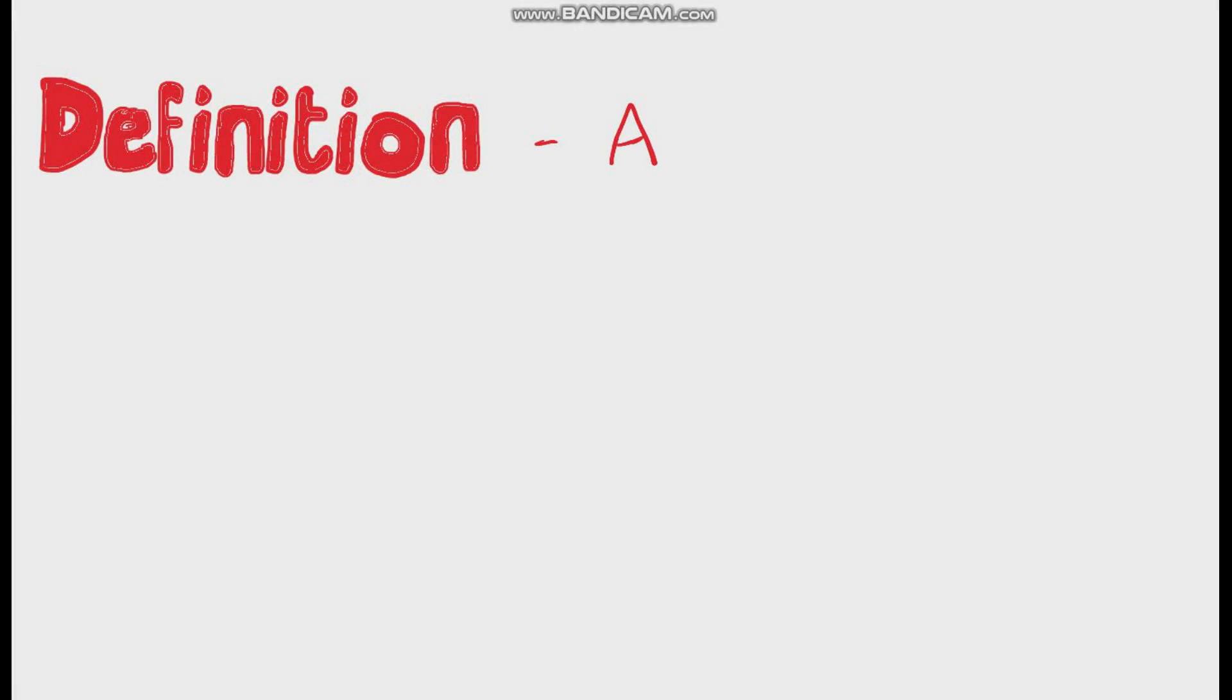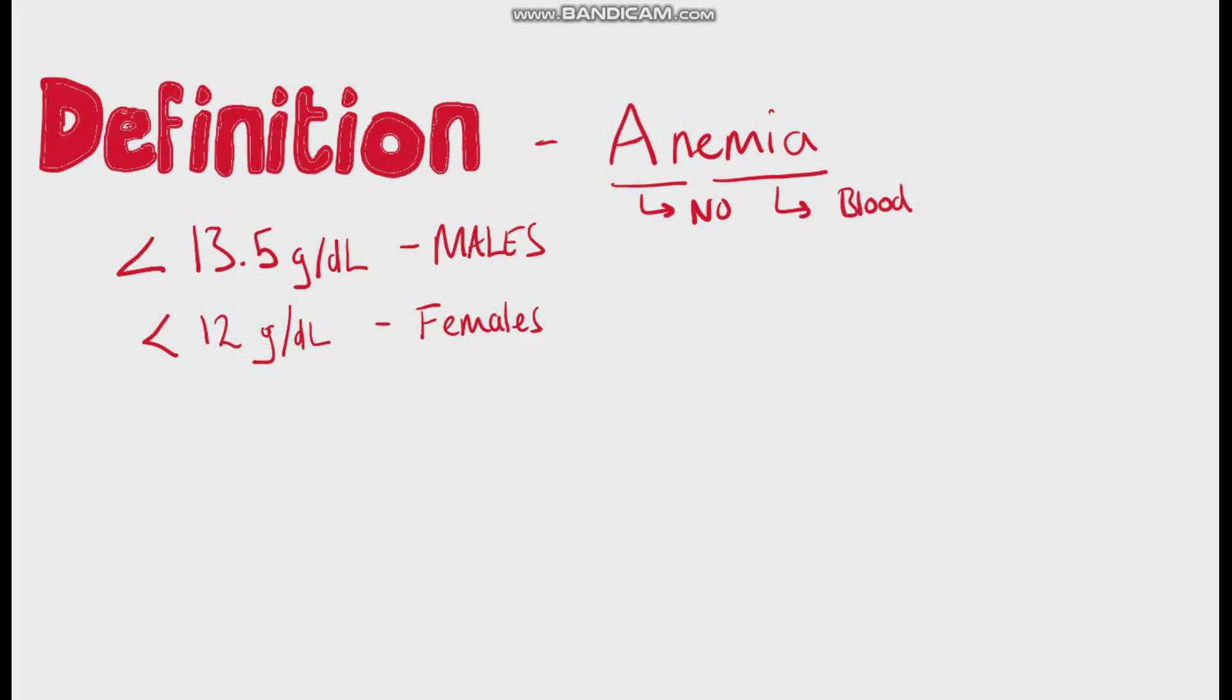Anemia. In anemia, 'an' means no and 'emia' means blood. So anemia is a condition where the patient has no blood. Just kidding. It means there's a deficiency of red blood cells or hemoglobin in the blood.